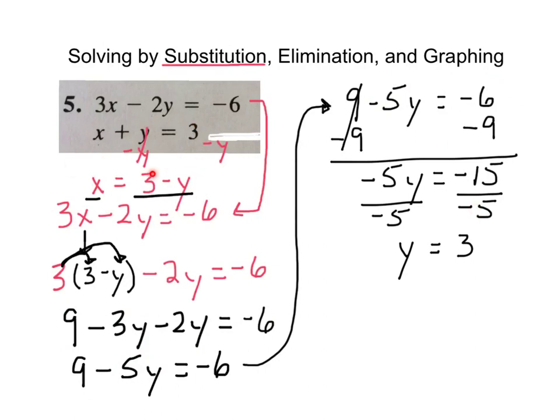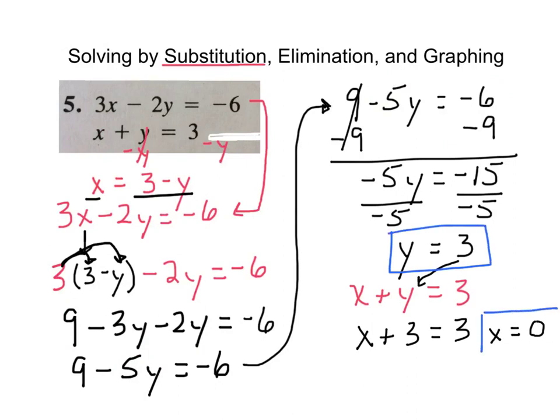Well, we can use any one of these equations here. I'll go ahead and use this x plus y equals 3. That was this equation we originally had. And now y is 3. So I can substitute in 3 for y. I get x plus 3 equals 3. So what does x equal then? 0. X equals 0, right? So we already had y equals 3. x equals 0. So our final answer would be 0, 3. Questions on that one?